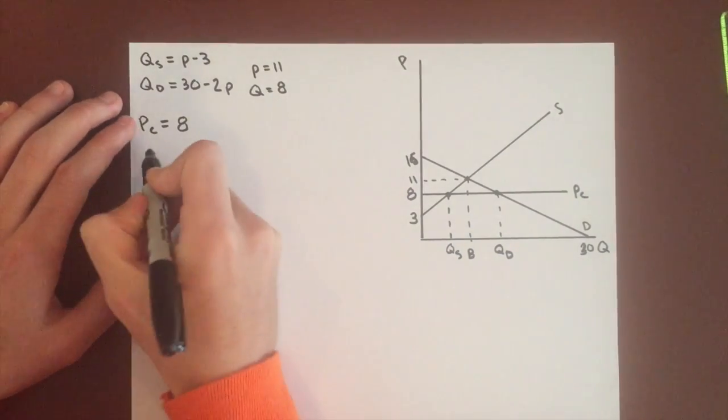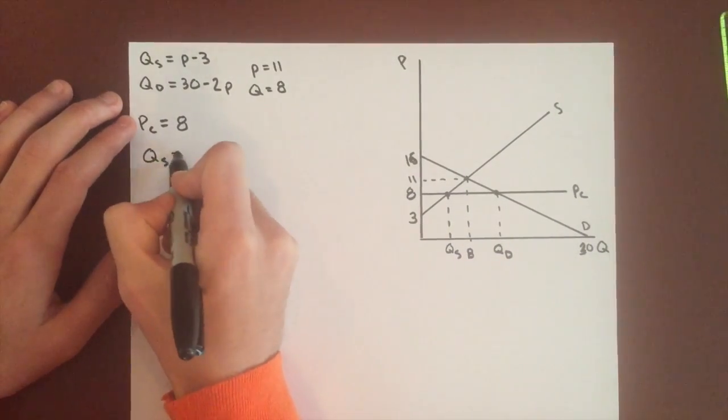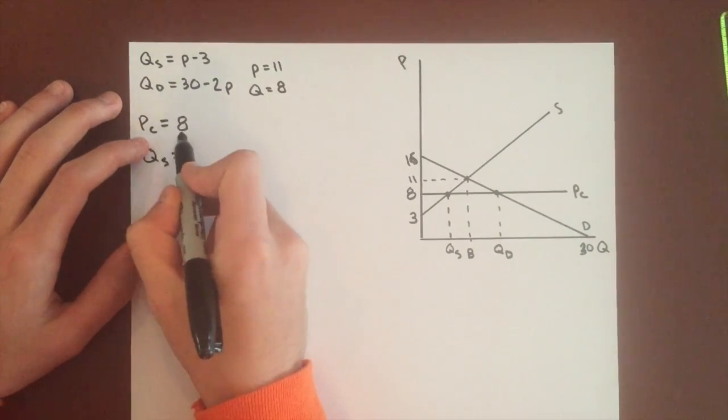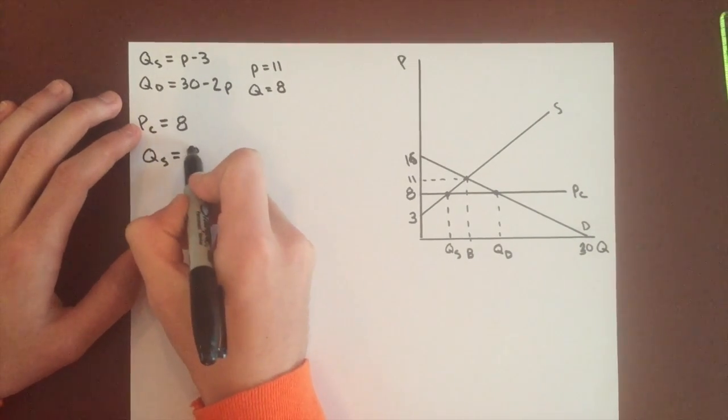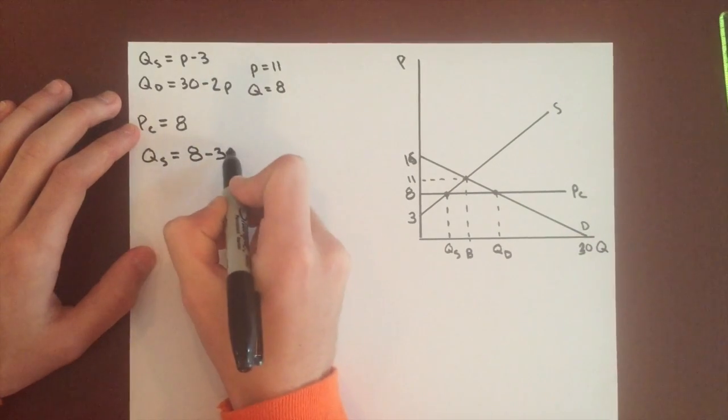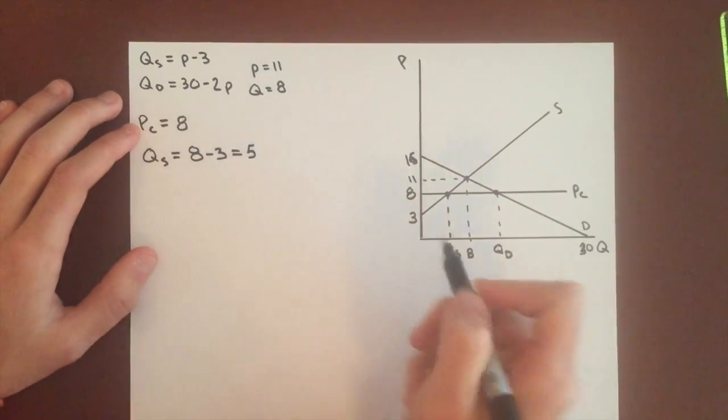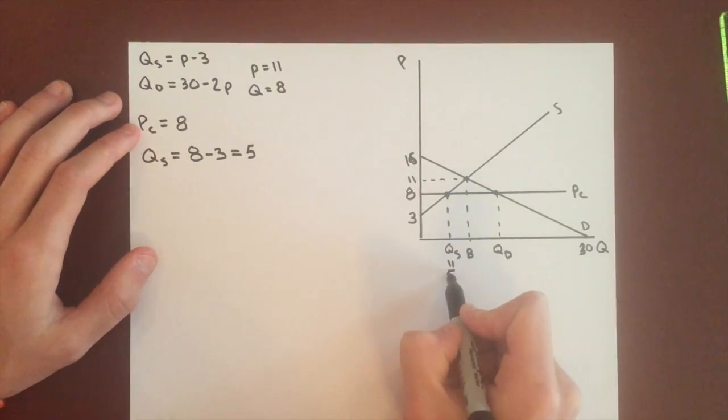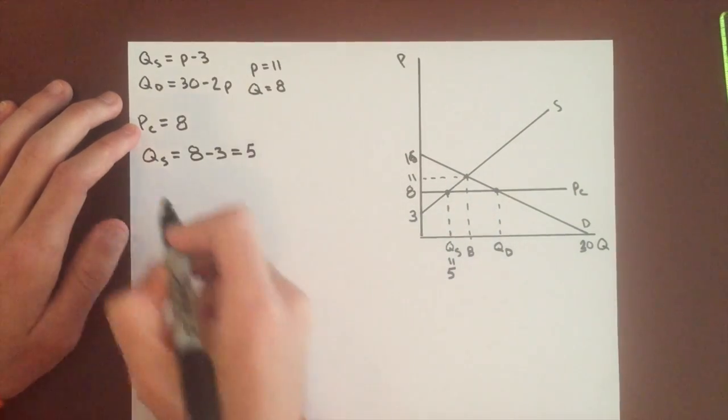So let's find quantity supplied when the price equals 8. So for this price ceiling, price equals 8 minus 3. So quantity supplied equals 5, which is less than that 8, so that checks out.